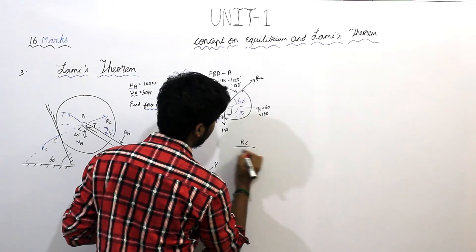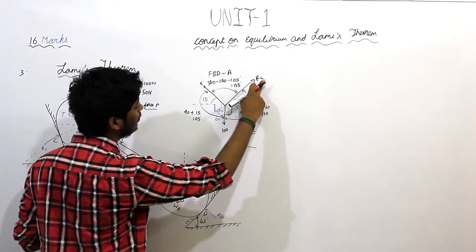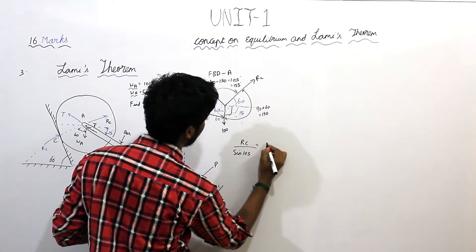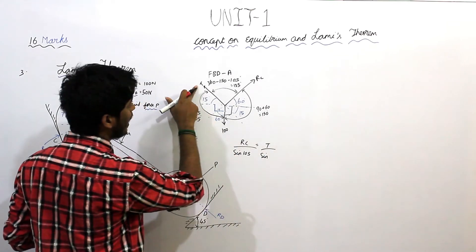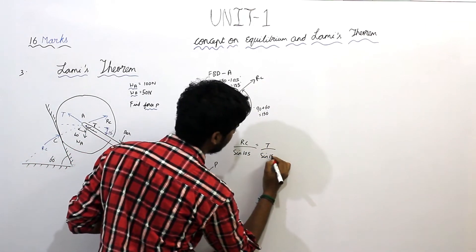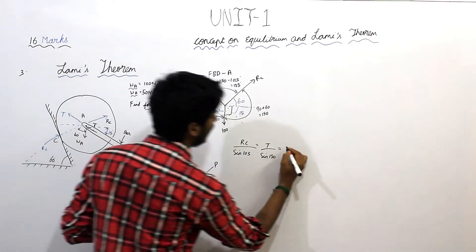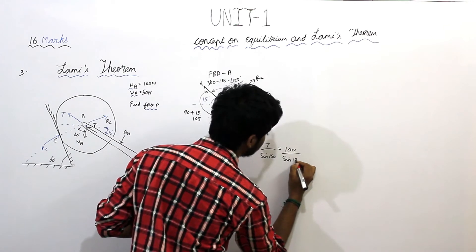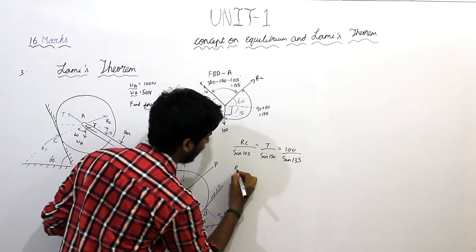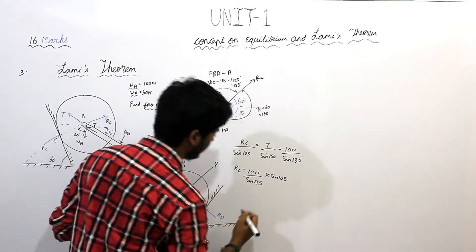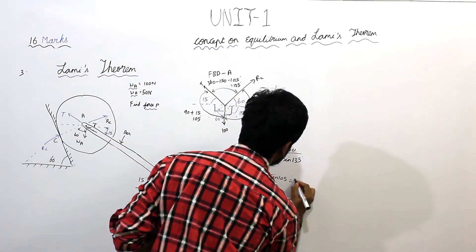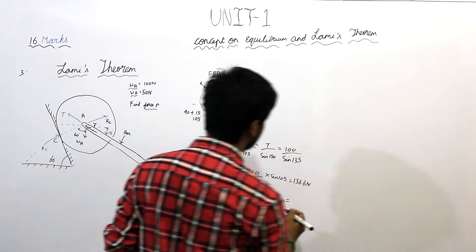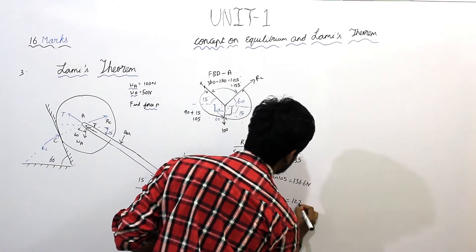RC is proportional to sin of the angle between the other two forces. The other two forces are T and 100. The angle between them is 105. T is proportional to sin of the angle between the other two forces, which is 150. 100 is proportional to sin of the angle between the other two forces, which is 135. Therefore RC equals 136.6 Newton and T equals 122.47 Newton.